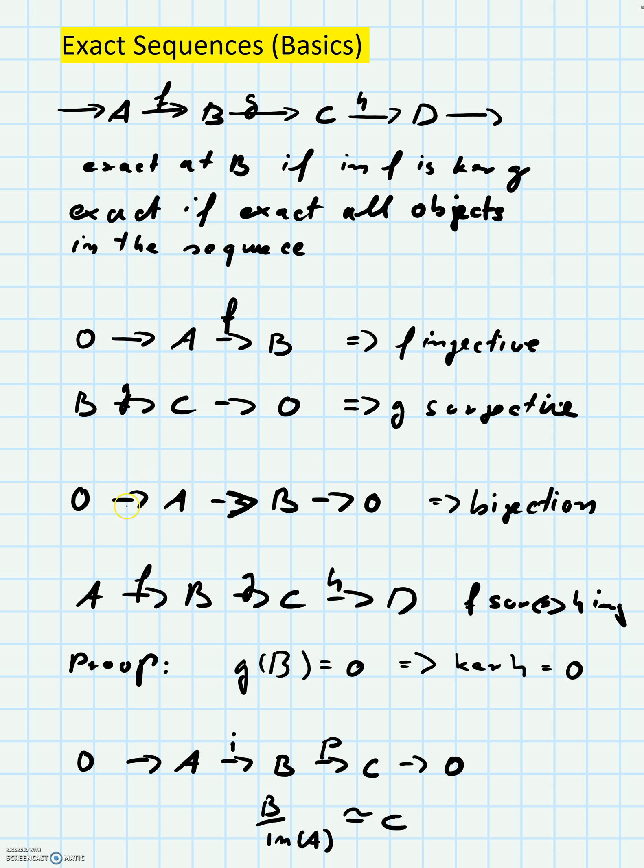And if you combine these two statements, if you look at a sequence 0→A→B→0, this has to be a bijection, because it has to be injective by our first statement and it has to be surjective by our second statement, so combined it is a bijection.